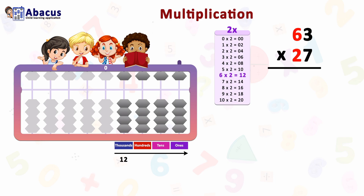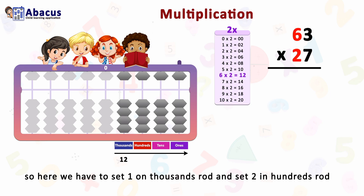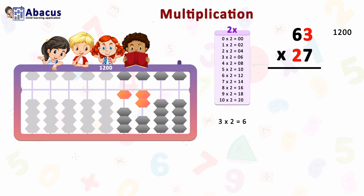Let's start with the first step. We multiply 6 by 2, which gives 12. We have to set 12 starting from the thousands rod: set 1 on the thousands rod and 2 on the hundreds rod. After the first step, we have 1200.